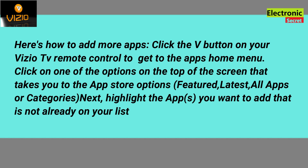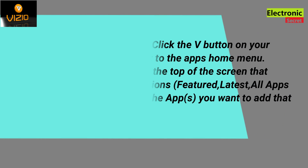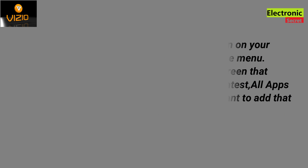Click on one of the options on the top of the screen that takes you to the app store options: Featured, Latest, All Apps, or Categories. Next, highlight the app you want to add that is not already on your list.